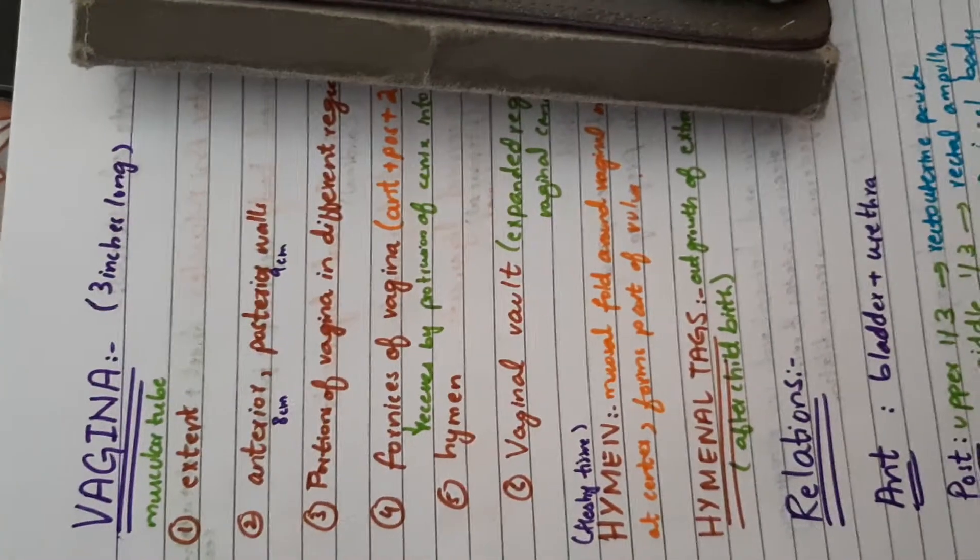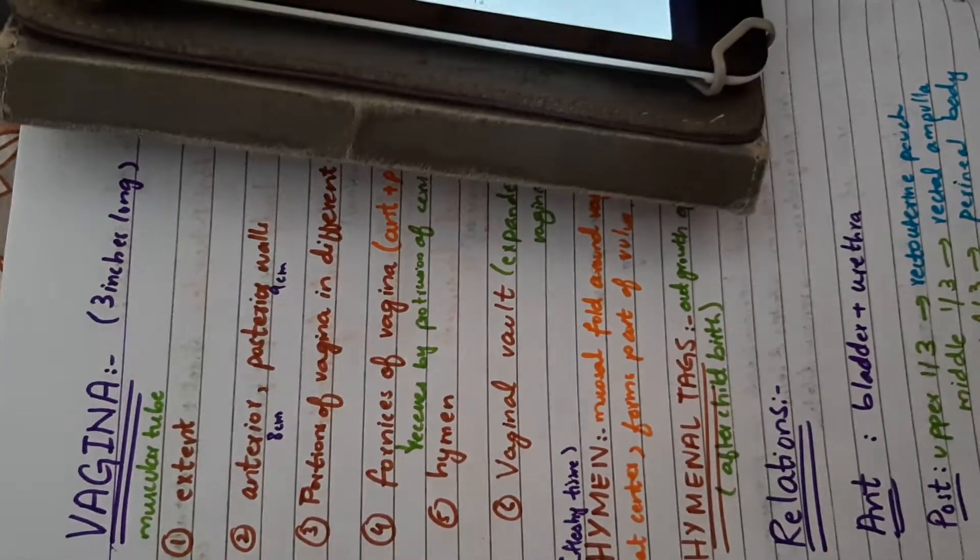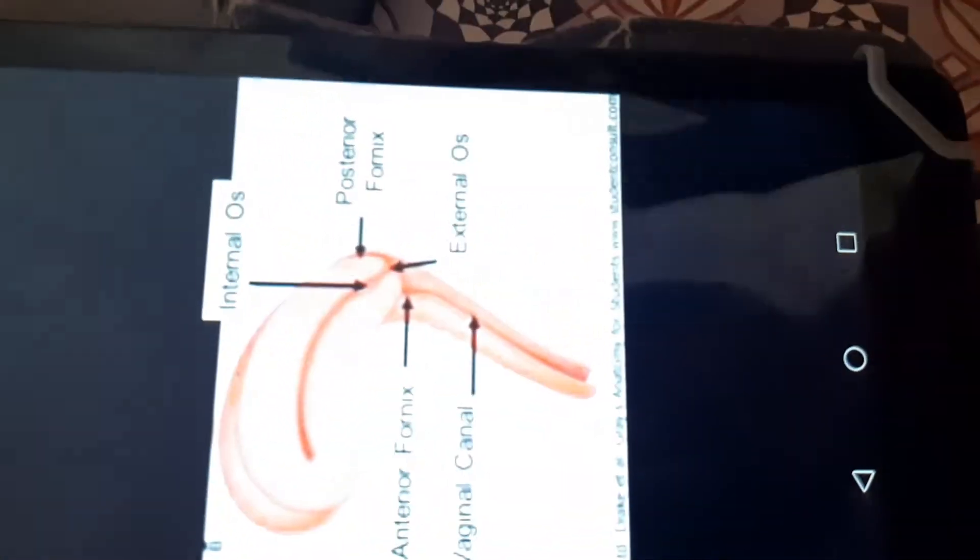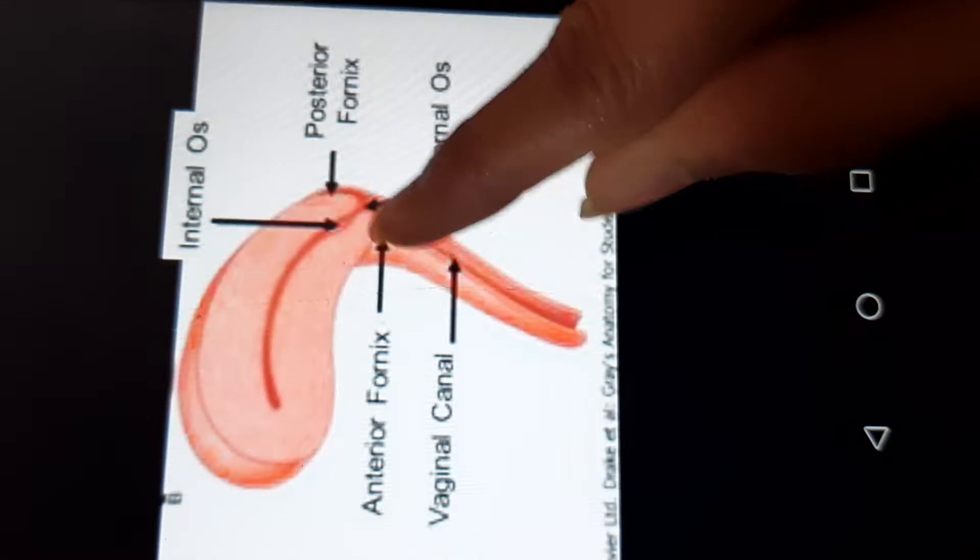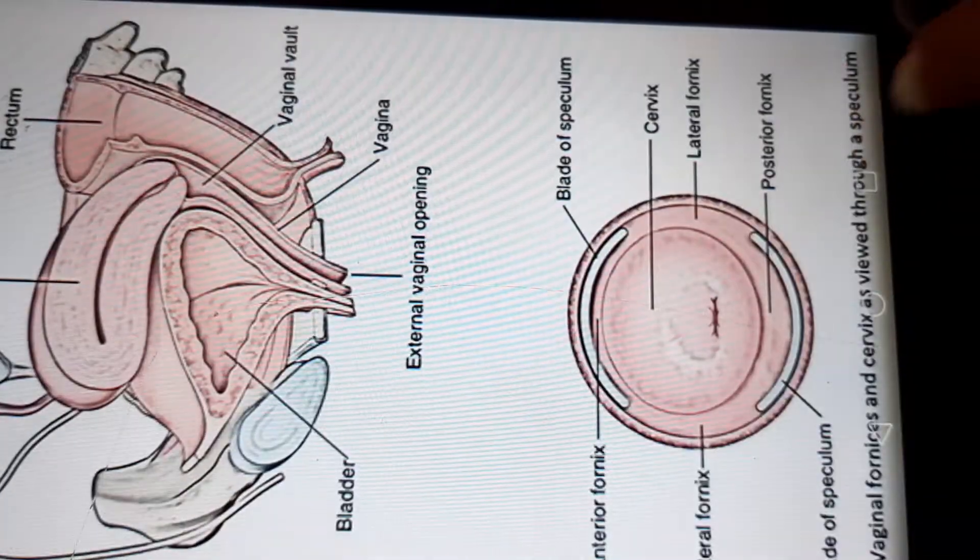Fornices of vagina. Fornices are vaginal lumen recesses around the cervix. There are four in number: anterior fornix, posterior fornix, and lateral fornix. This figure is more clear.